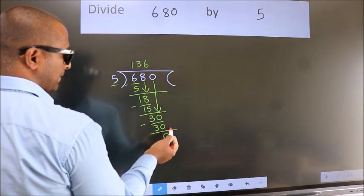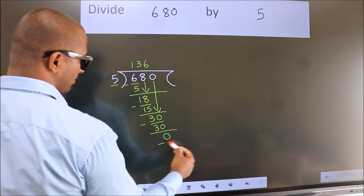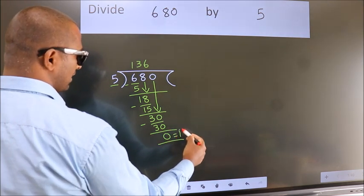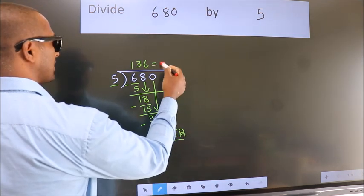No more numbers to bring it down. So we stop here. This is our remainder. This is our quotient.